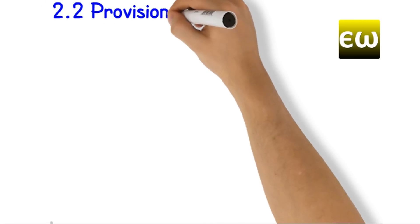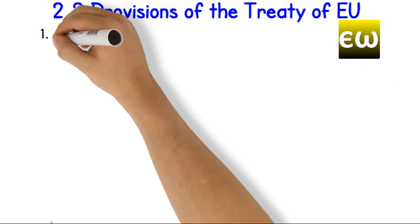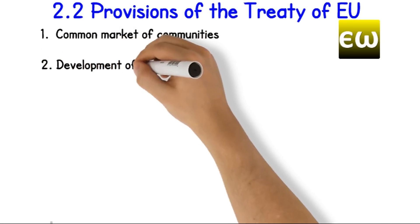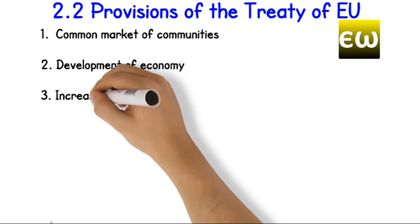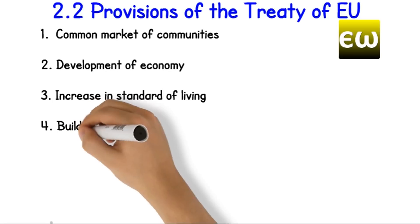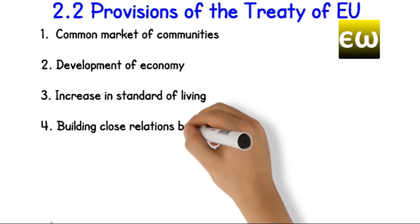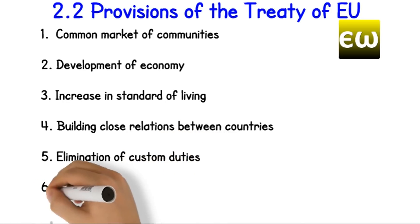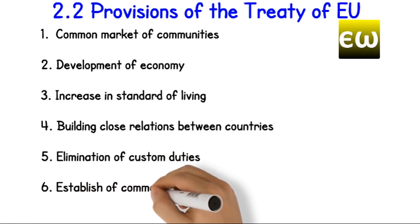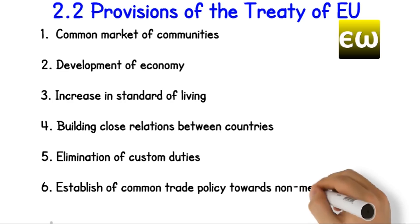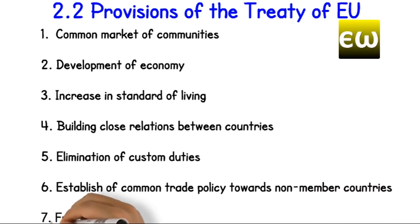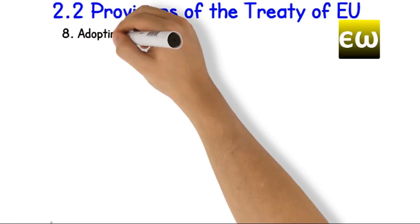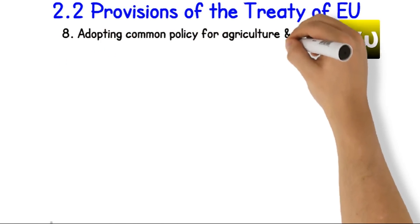Provisions of the Treaty of Economic Union. 1. Common market of communities. 2. Development of economy. 3. Increase in standard of living. 4. Building close relations between countries. 5. Elimination of custom duties. 6. Establish a common trade policy towards non-member countries. 7. Free movement of factor of productions. 8. Adopting common policy for agriculture and transportation.